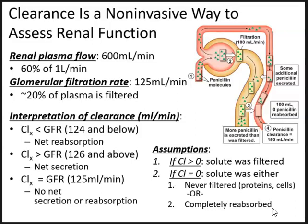Using protein as an example: normal blood protein is 6 to 8 g/dL. Clearance of protein is 0 because it was never filtered in the first place. Substances with clearance equal to GFR have no net secretion or reabsorption, and we can use such substances to clinically measure GFR — we'll get to that shortly.